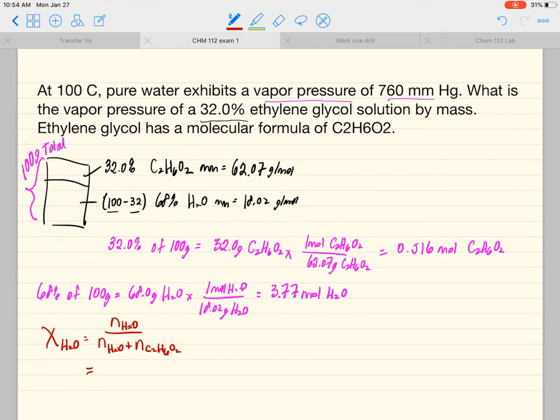If I plug that in here, we got moles of water. Remember how moles cancels out and we're left with a unitless number. So if we punch this in on our calculator, 3.77 divided by, and use parentheses, 3.77 plus 0.516, close the parentheses, hit the equal, we get 0.880. That's our mole fraction.